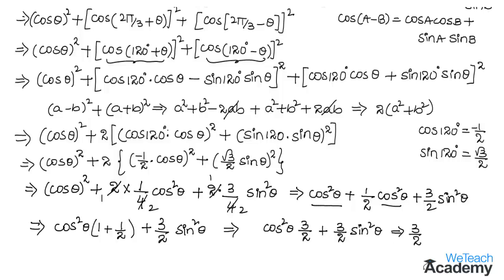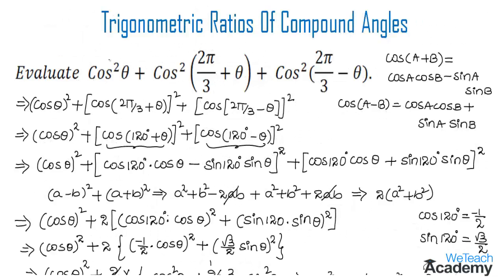Then taking 3/2 as a common factor, we get (3/2)(cos²θ + sin²θ). Using the trigonometric identity sin²θ + cos²θ = 1, we get 3/2 × 1 = 3/2. Therefore, cos²θ + cos²(2π/3 + θ) + cos²(2π/3 − θ) = 3/2. Remember the formulas: cos(A+B) = cosA cosB − sinA sinB and cos(A−B) = cosA cosB + sinA sinB. Hope you understood the concept. For more videos on trigonometry visit vteachacademy.com. Thanks for watching!